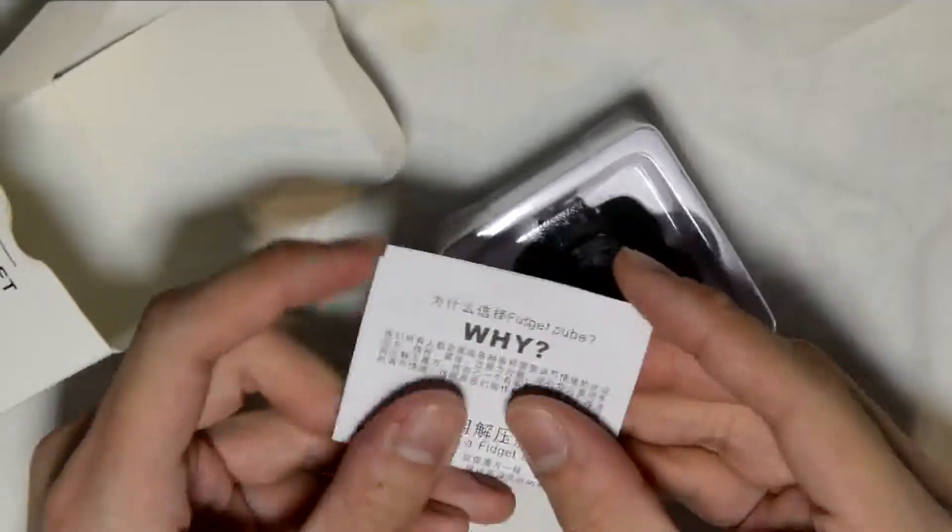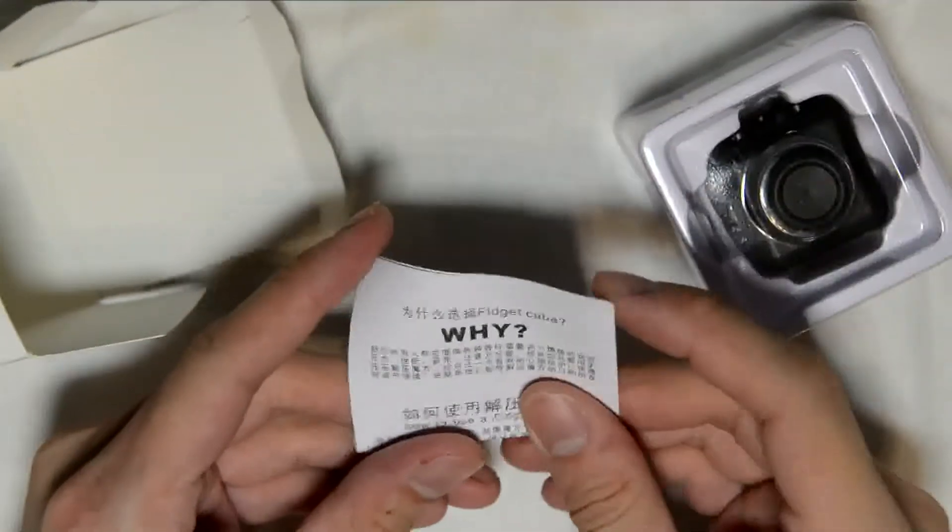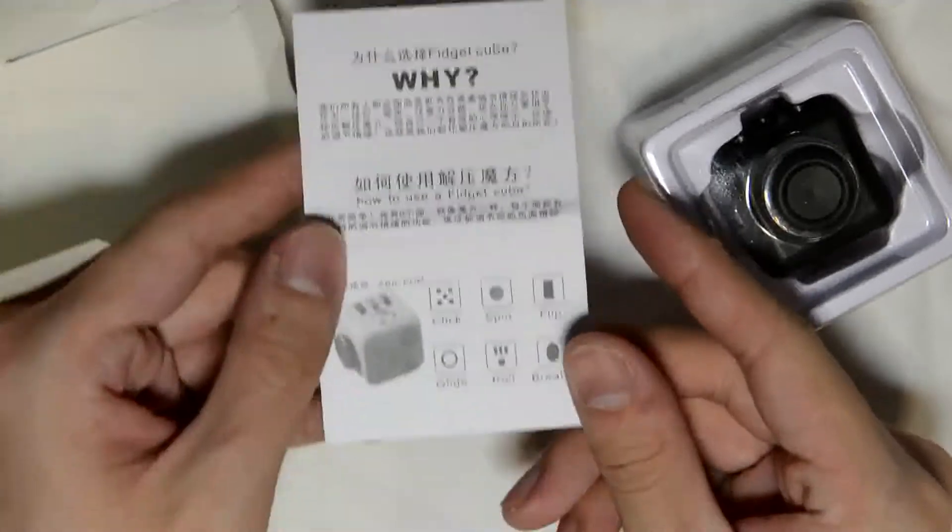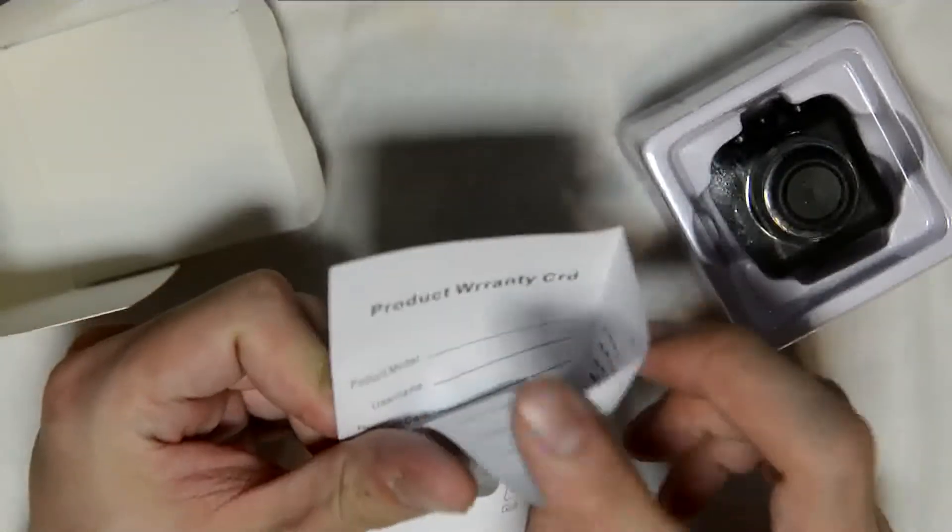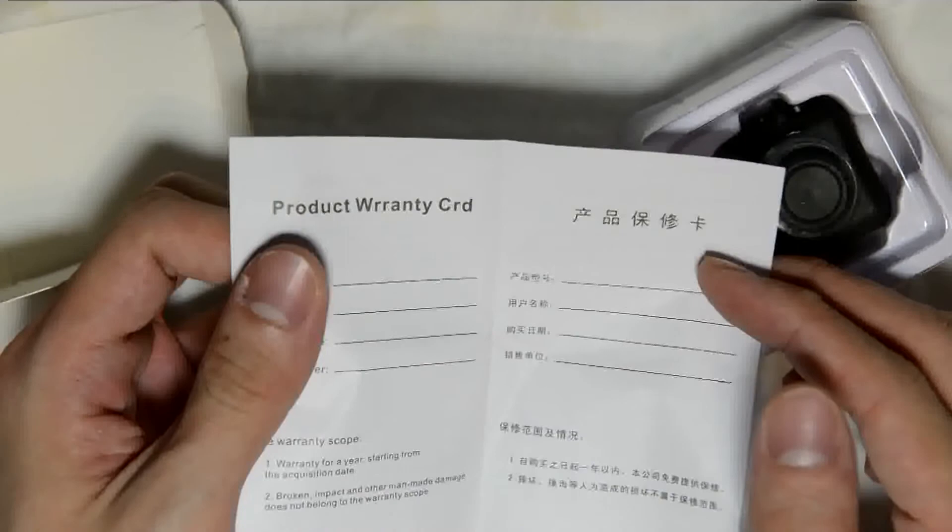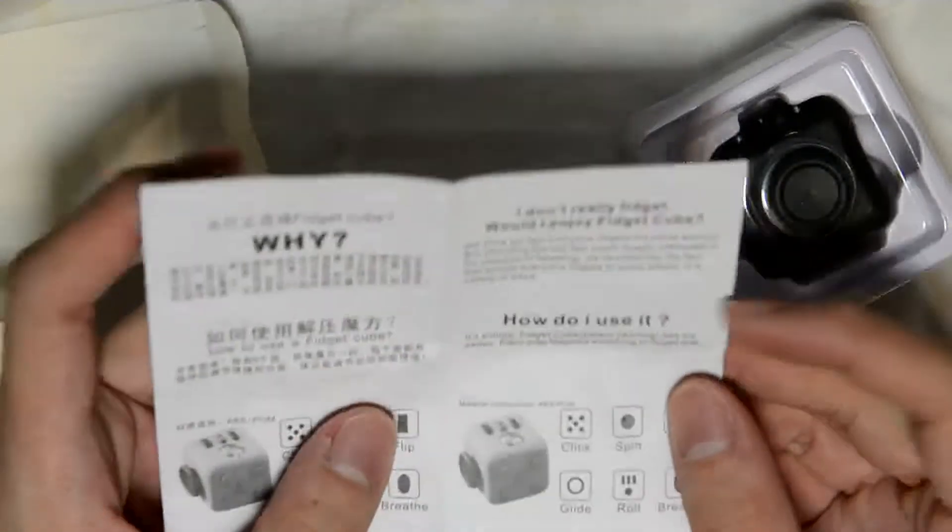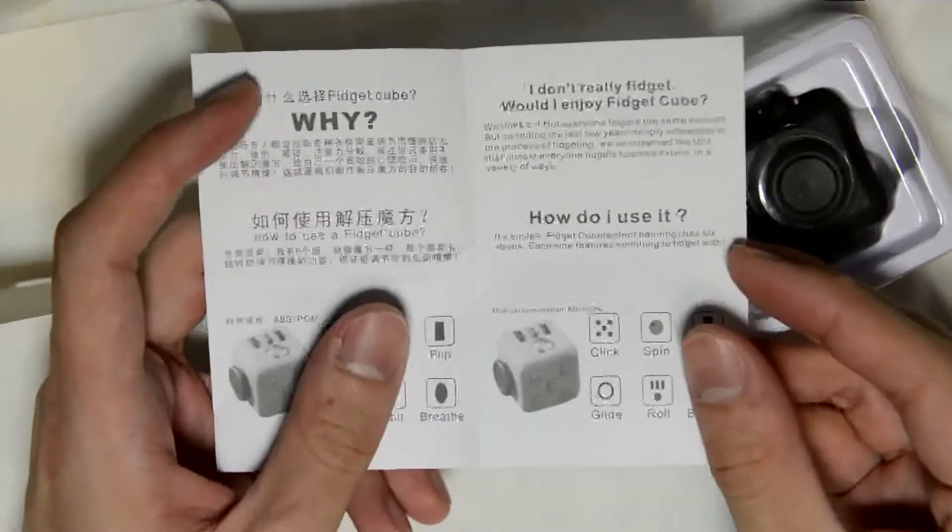I'm not sure how the original one looks like, so all the packaging and whatnot, but this is what you get in the imitation one. Product warranty. All these are basically useless. How do I use it? It's simple. Let's just take a look at the product itself.